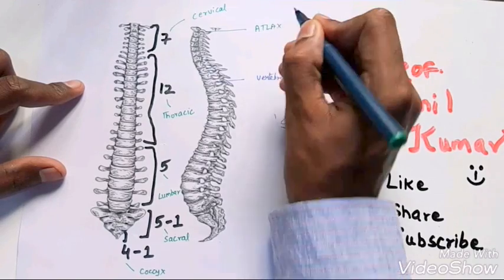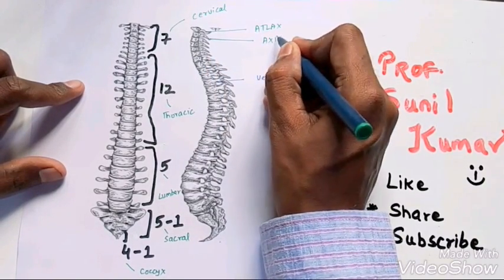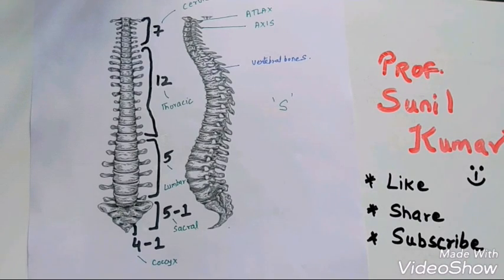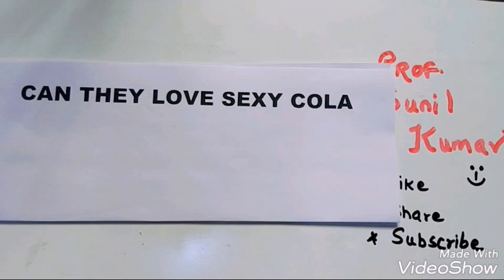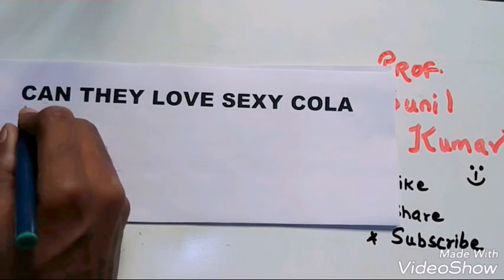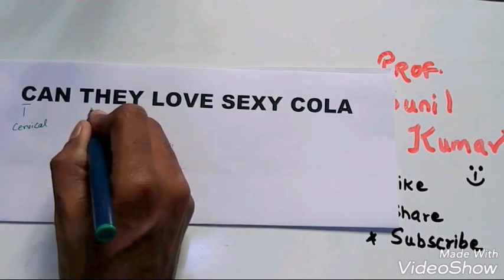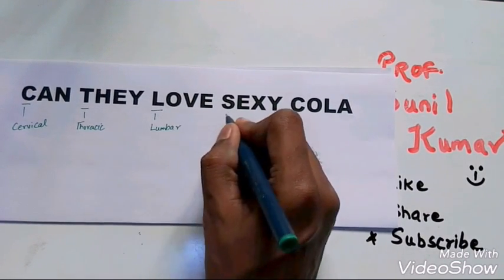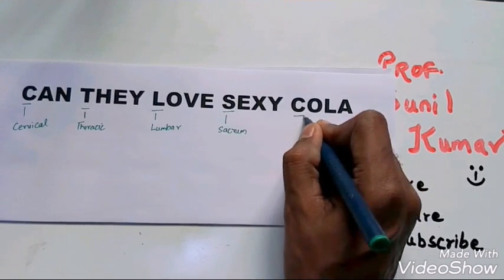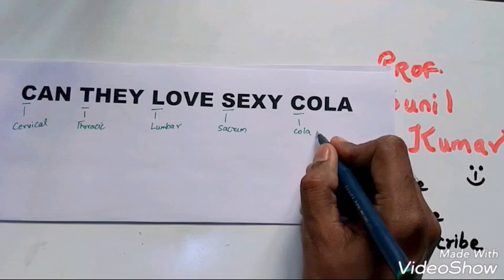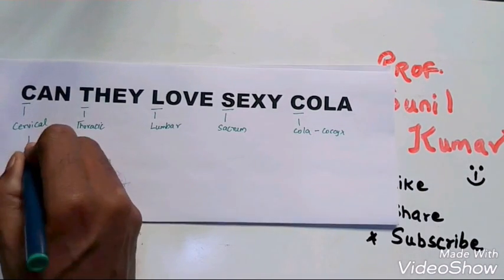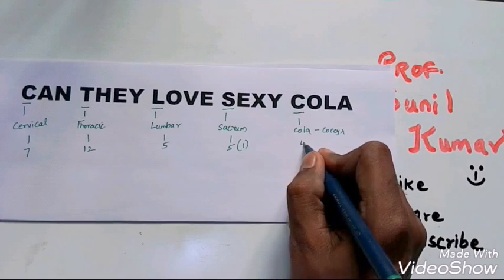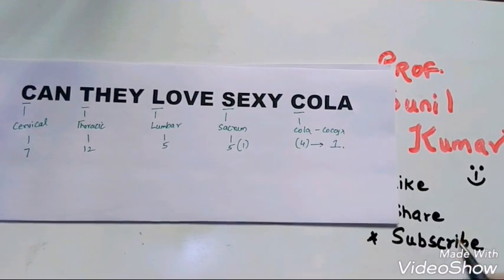The first vertebral bone is called Atlas and the second vertebral bone is called Axis. So this is how you can remember your vertebral bones. In a simple way, there's a shortcut which I've created. The shortcut says: can they love sexy cola. Can is cervical, they is thoracic, love is lumbar, sexy is sacrum, and cola is coccyx.